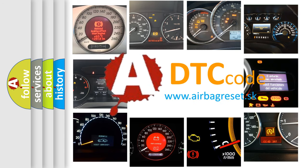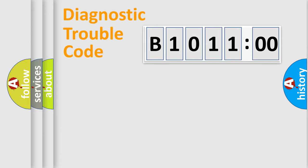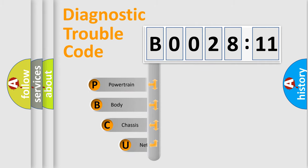We divide the electric system of automobile into four basic units: Powertrain, body, chassis, and network. This distribution is defined in the first character code.